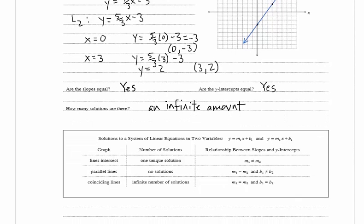They give us a summary box covering everything from the three examples. If the lines intersect, then we have one unique solution and the slopes are not equal. If we have parallel lines, there's no solution — slopes are equal but y-intercepts are different. If we have coinciding lines, there are an infinite number of solutions — slope is equal and y-intercept is equal. That's all for this video on solving a system of equations by graphing.